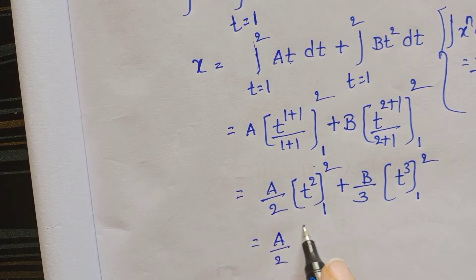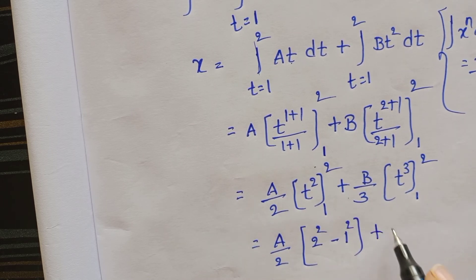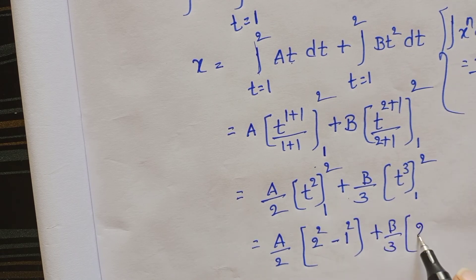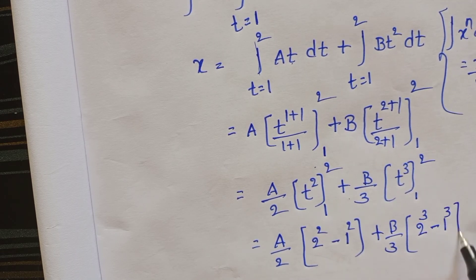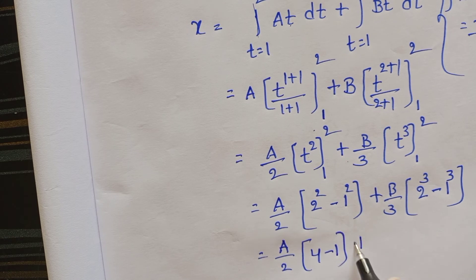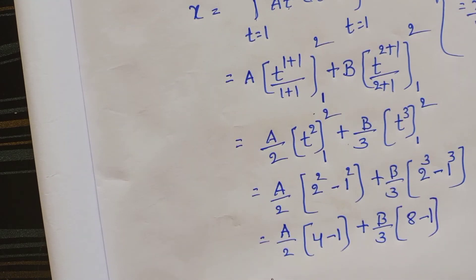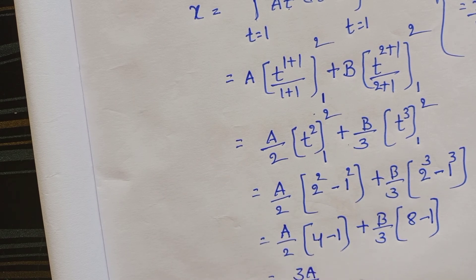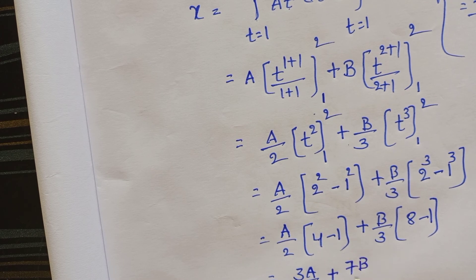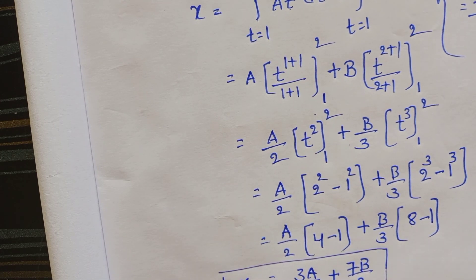Substituting upper limit minus lower limit: (a/2)(2 squared minus 1 squared) plus (b/3)(2 cubed minus 1 cubed) equals (a/2)(4 minus 1) plus (b/3)(8 minus 1), which gives 3a/2 plus 7b/3. So the distance travelled is 3a/2 plus 7b/3.